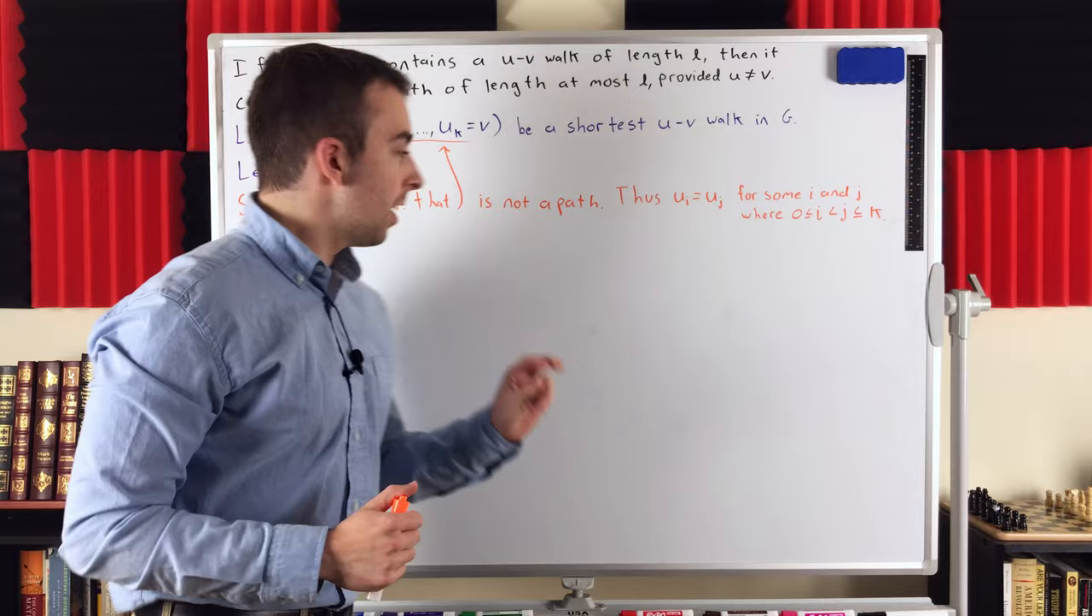The important part is that these vertices, UI and UJ, they appear at different points in the walk, and they're equal. So the walk repeats vertices. And since we know the walk repeats vertices, because we assumed it's not a path, that's how we know that there must be some I and J such that this is true.